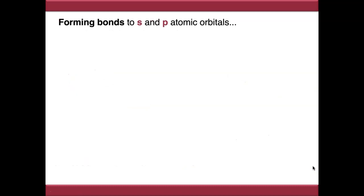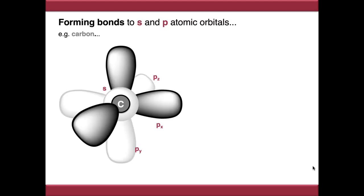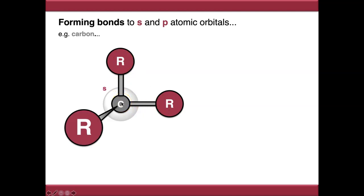If we want to form bonds with s and p atomic orbitals as they are, taking a carbon atom with an s-orbital and the Px, Py and Pz orbitals, and start forming bonds: a bond to Px, a bond to Py — these are now at 90 degrees to each other because that's the orientation the orbitals are in. The Pz orbital is again mutually at 90 degrees, so we've got 90-degree bond angles between all three substituents.